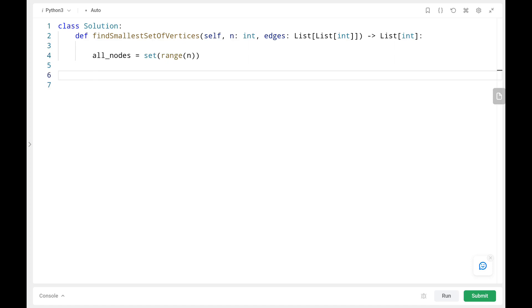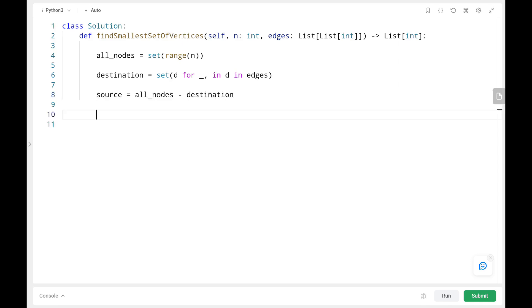Then we are taking the destination variable where I will only take the destination from my edges input. Then I will take the set difference between these two sets where I will be getting the uncommon nodes in the source variable.